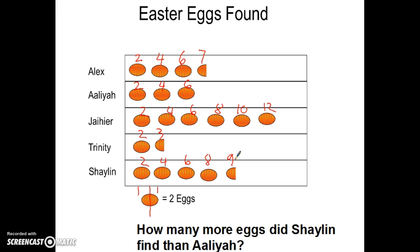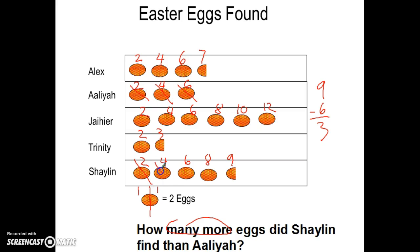So we said: how many more eggs did Shailen find than Aaliyah? 'How many more' means minus. Shailen is at 9, minus Aaliyah at 6, gives an answer of 3. Some people also like to just mark out those 3, mark out 3 there, and then go: what do I have left? 2 plus 1 more — 3.